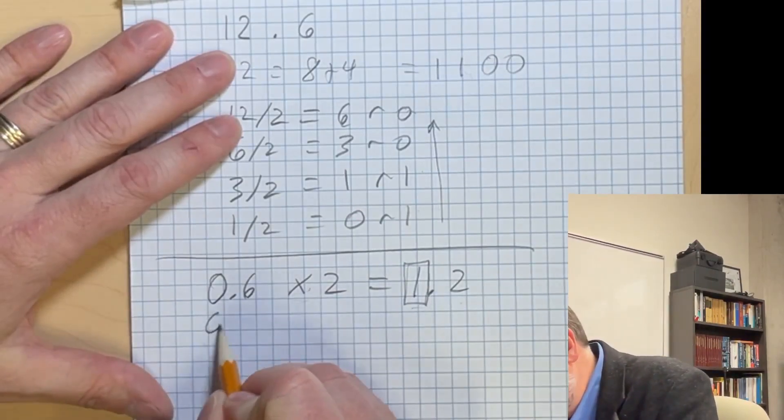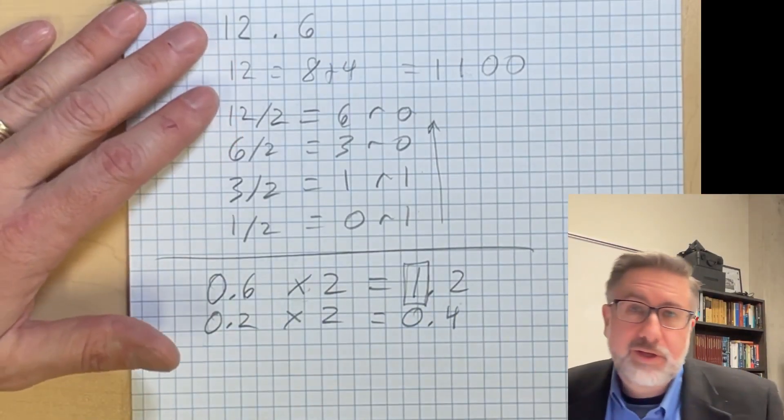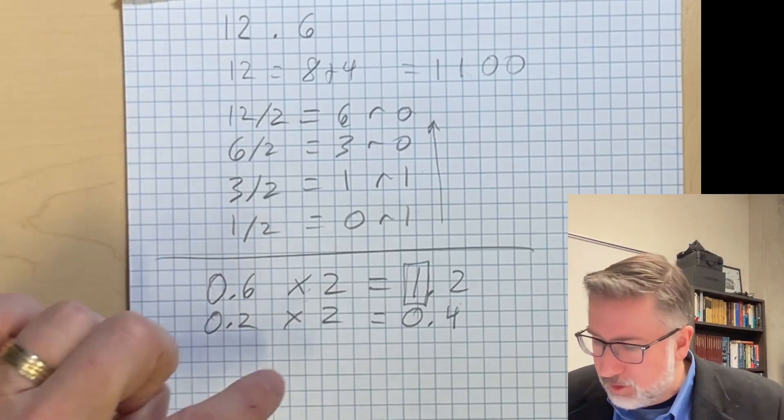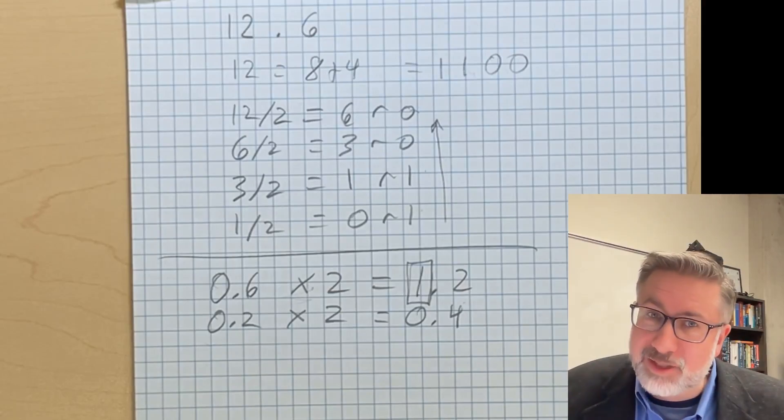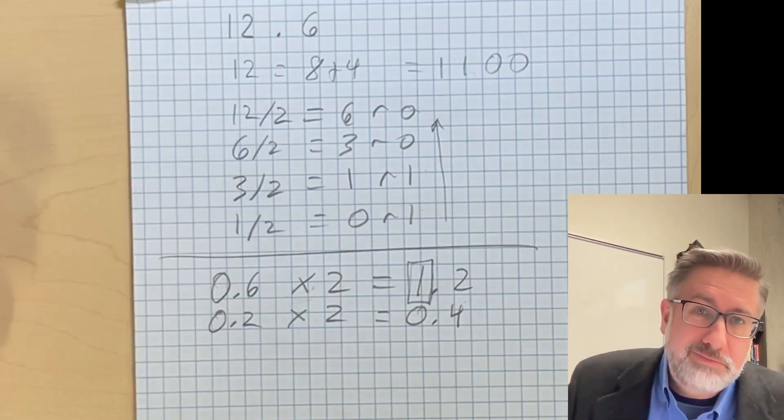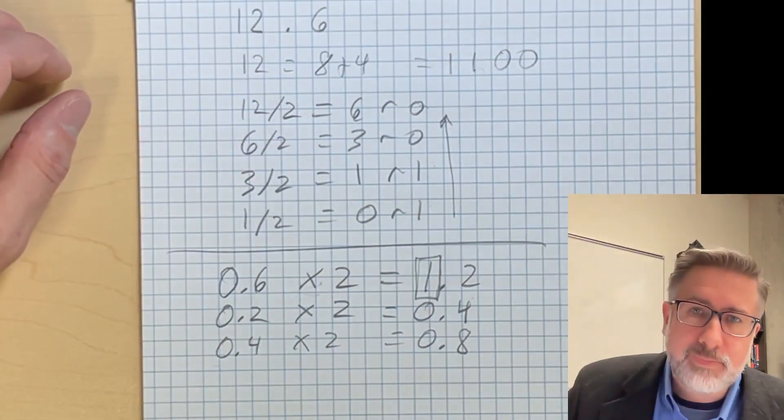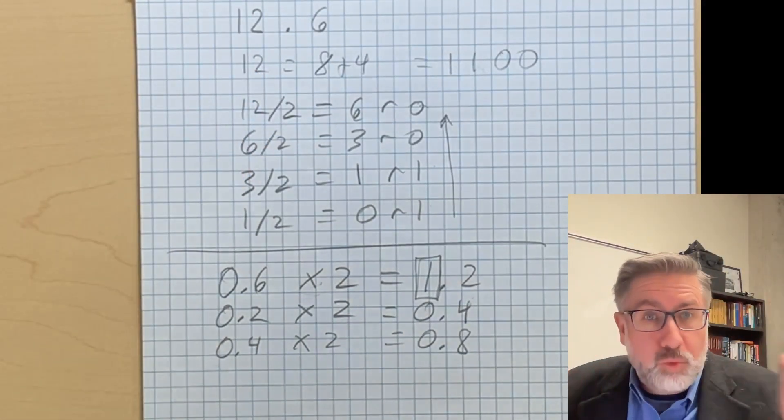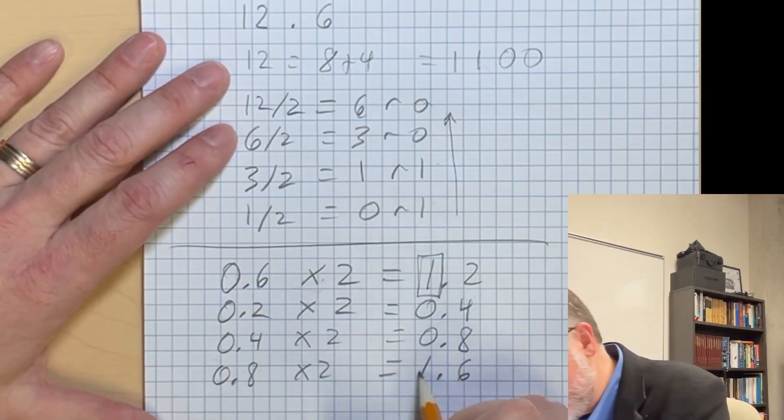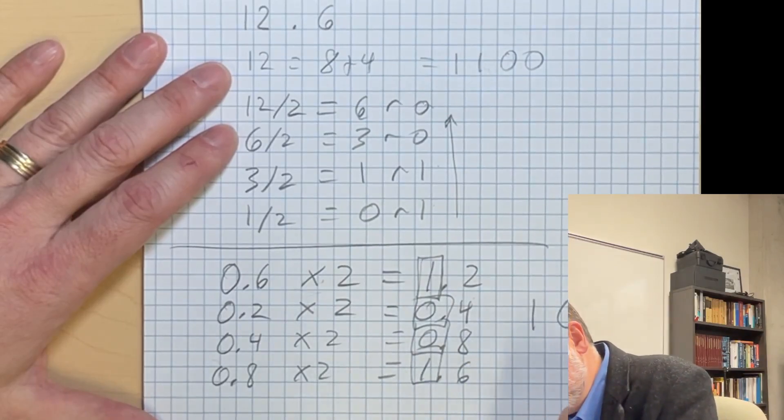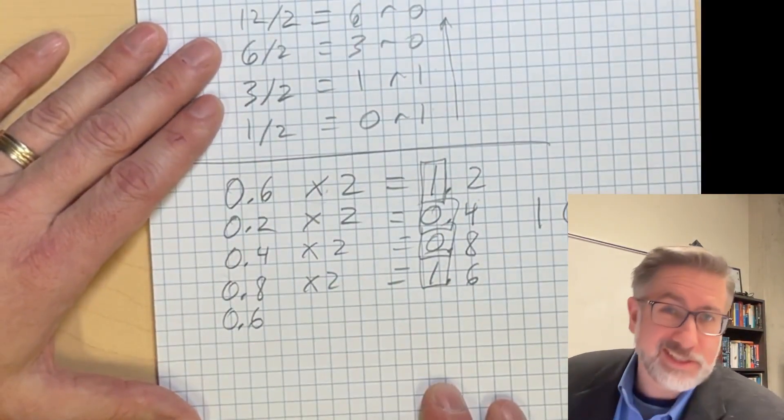Now we do the same thing over and over again. Now we take the 0.2, we multiply by 2, we get 0.4. That means there wasn't anything in the one quarters space because if the number was bigger than a quarter it would have given us value in that spot. Since 0.2 is less than 0.25, now we get nothing in that spot and we go again. Now we take 0.4 times 2 is 0.8, so there wasn't anything in the one eighth category. Now we take 0.8 times 2 and we get 1.6.